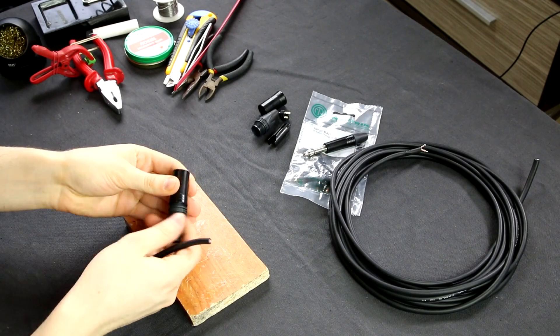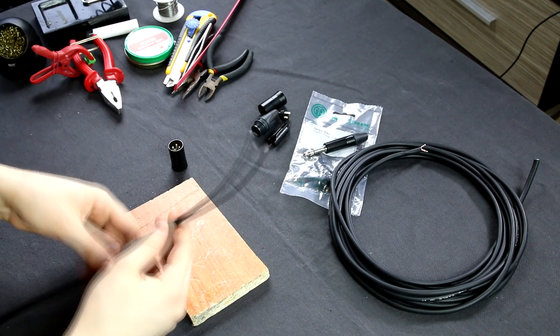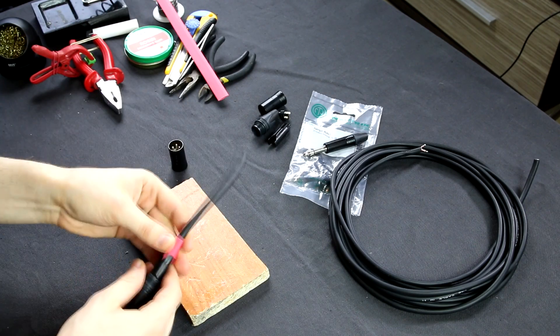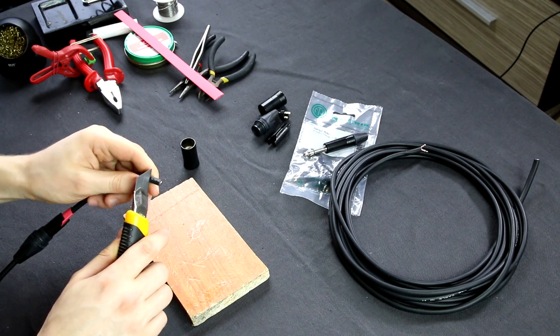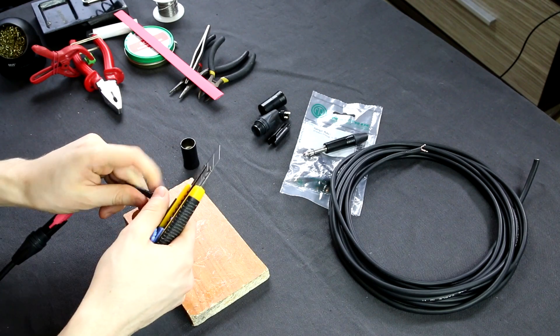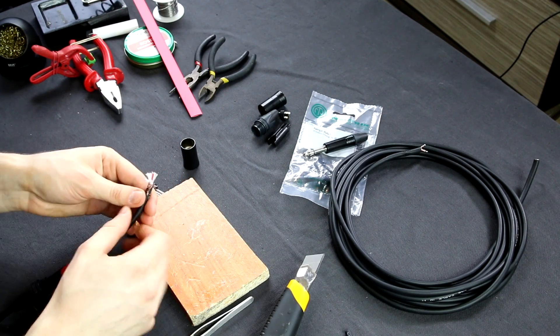You can start by putting the XLR plug parts on the cable and adding a heat shrink tubing. Prepare the cable for soldering, also check if the cable's length is good for you. If not, simply cut off some part.